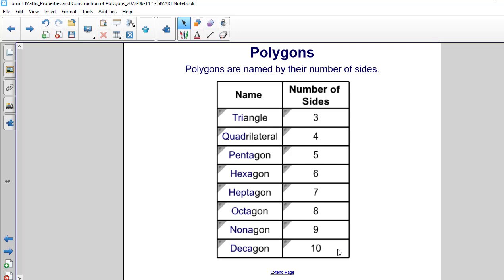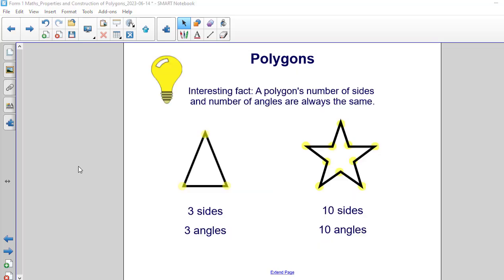There are more polygons, but these are just the first eight named ones. An interesting fact about polygons: a polygon's number of sides and number of angles are always the same. You'll notice on the left side we have a triangle. This triangle has three sides. It also has three angles. The three angles are highlighted with a yellow circle.